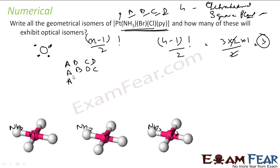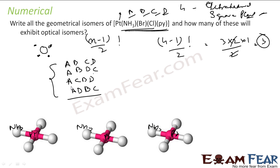For the third arrangement, we consider A opposite C with B and D in the remaining positions, giving A, C, D, B. We check for duplicates among the three arrangements. After verification, A-D-B-C turns out to be a duplicate of a previous arrangement, so we confirm exactly three unique combinations: A-B-C-D, A-D-C-B, and A-C-D-B.